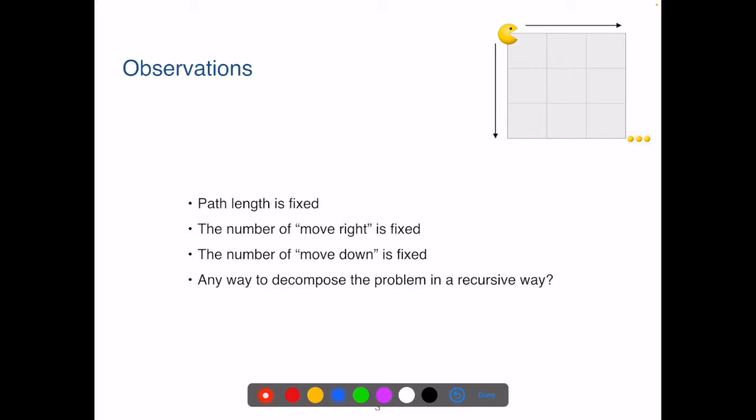Next, let's see if we can come up with an efficient algorithm for this problem. First, we go through some observations of this problem. The path length is fixed, it is always 2n. The number of move right is also fixed, n, and so is the number of move down.